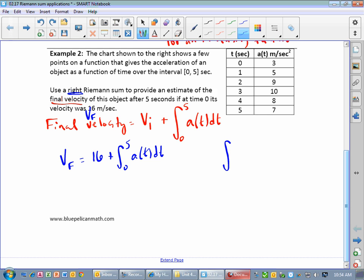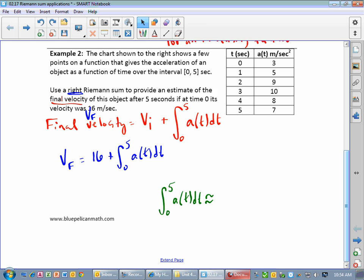So, over here to the side, the integral from 0 to 5 of a(t) dt is approximately, so we're going to approximate this using the right Riemann sum. So how wide is each rectangle going to be? Each, we've got seconds here. We have 1 interval, 2 intervals, 3 intervals, 4 intervals, 5 intervals. Notice, 5 minus 0 is 5, divide by the number of intervals, we'll have 5 intervals, so each one is 1. So we have 1 times, now for a right Riemann sum, we skip the first one and go all the way to the last one. So we have 5 plus 9 plus 10 plus 8 plus 7.